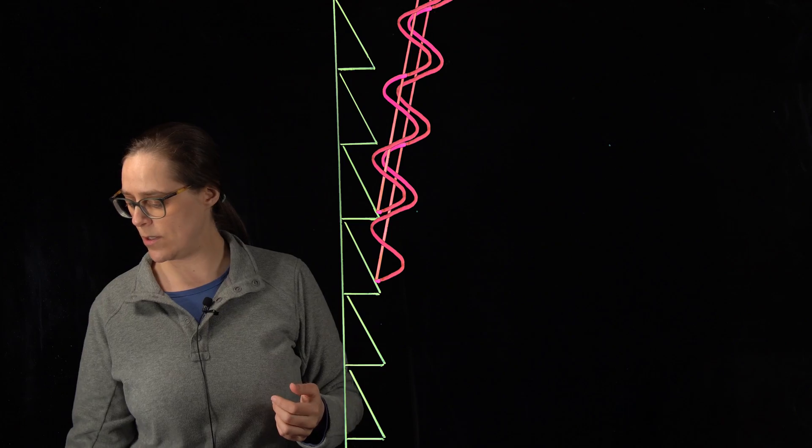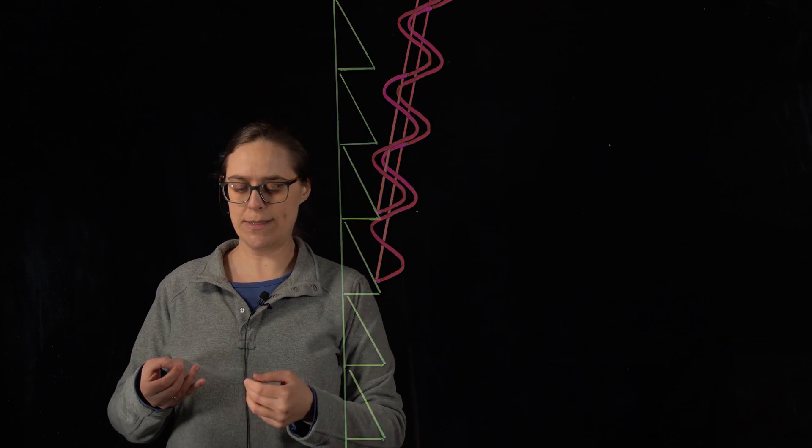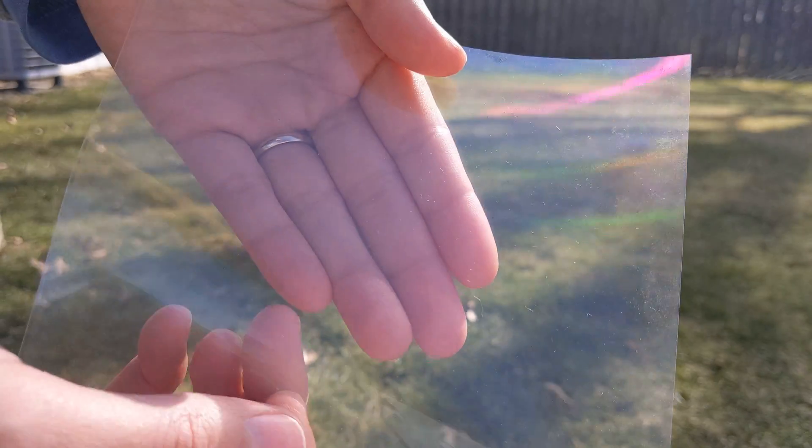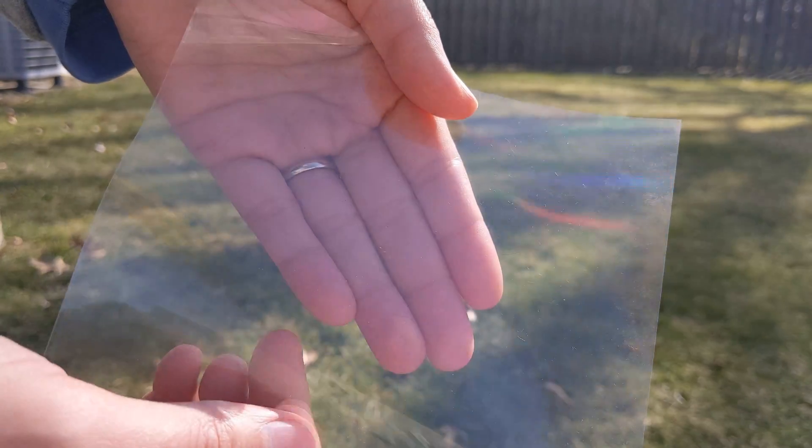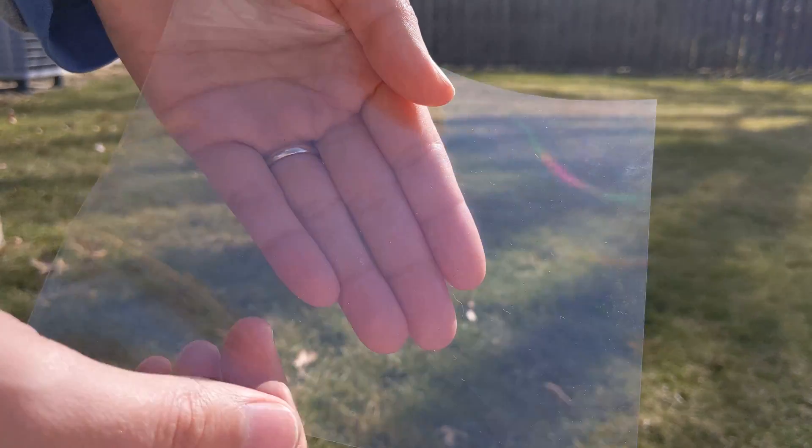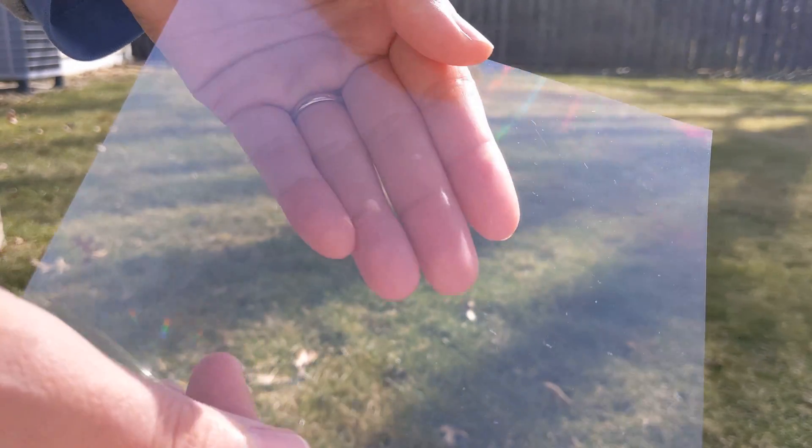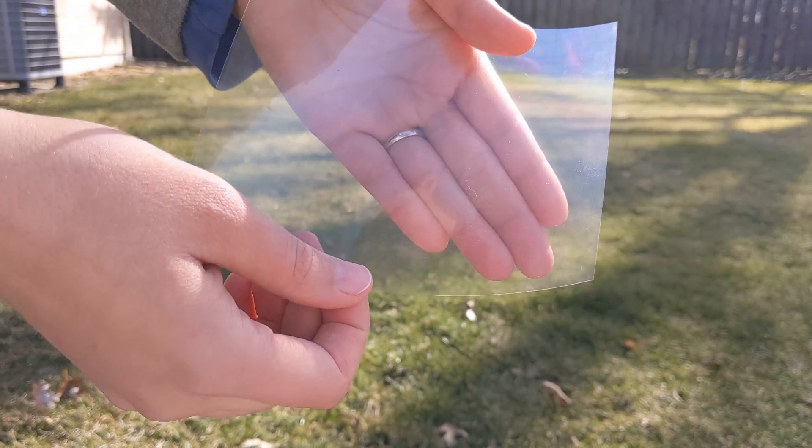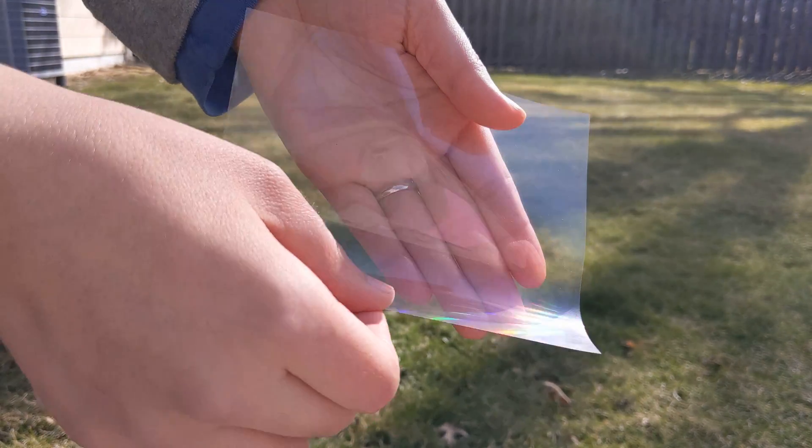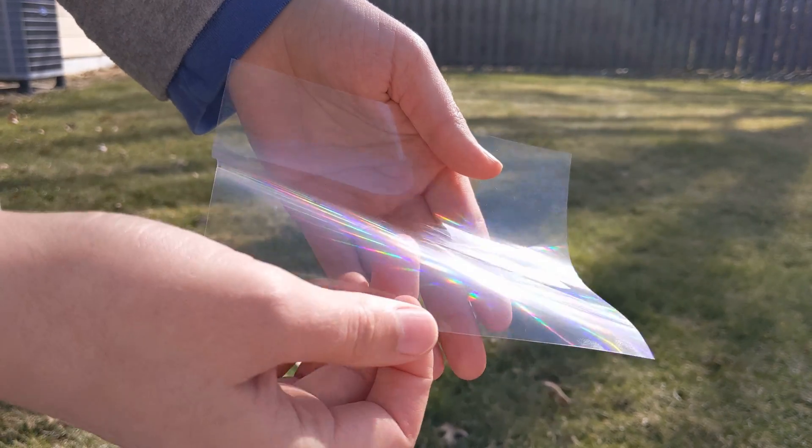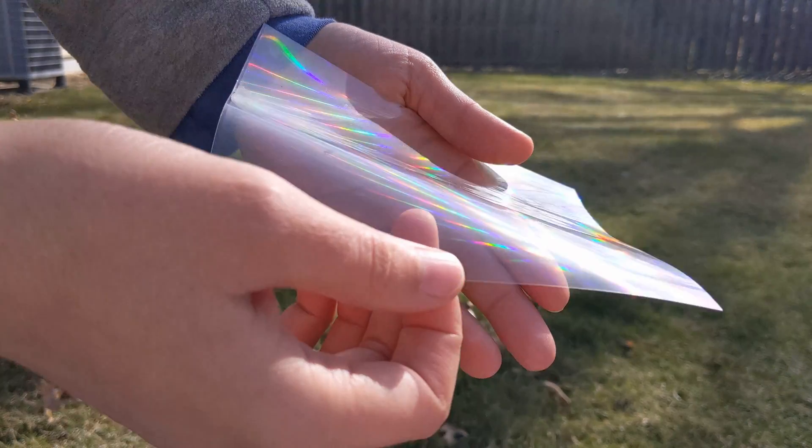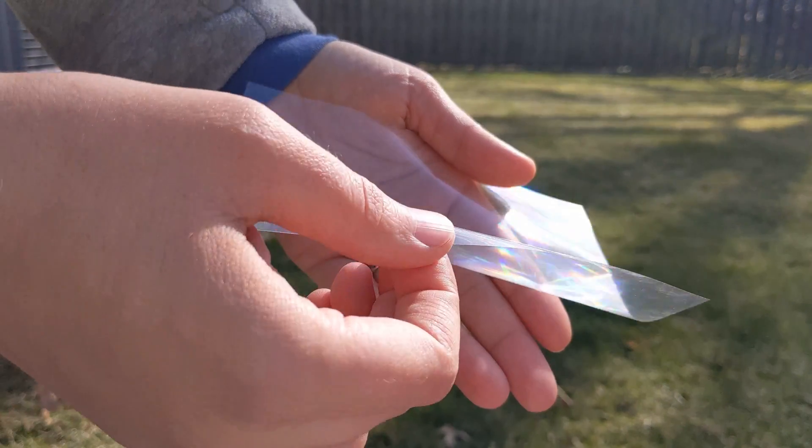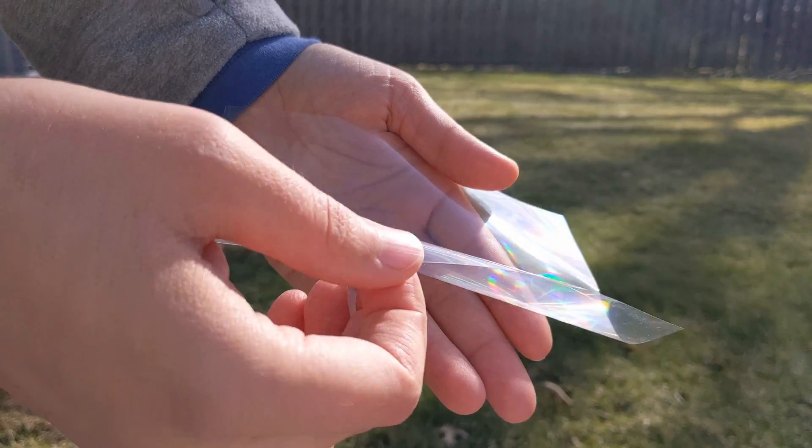So what happens when I shine white light on this diffraction grating is I see a very complex rainbow pattern. I am only able to see the colors that are currently constructively interfering at that particular location. So it depends on the wavelength, but it also depends on the angle of incidence of the original light hitting this diffraction grating.